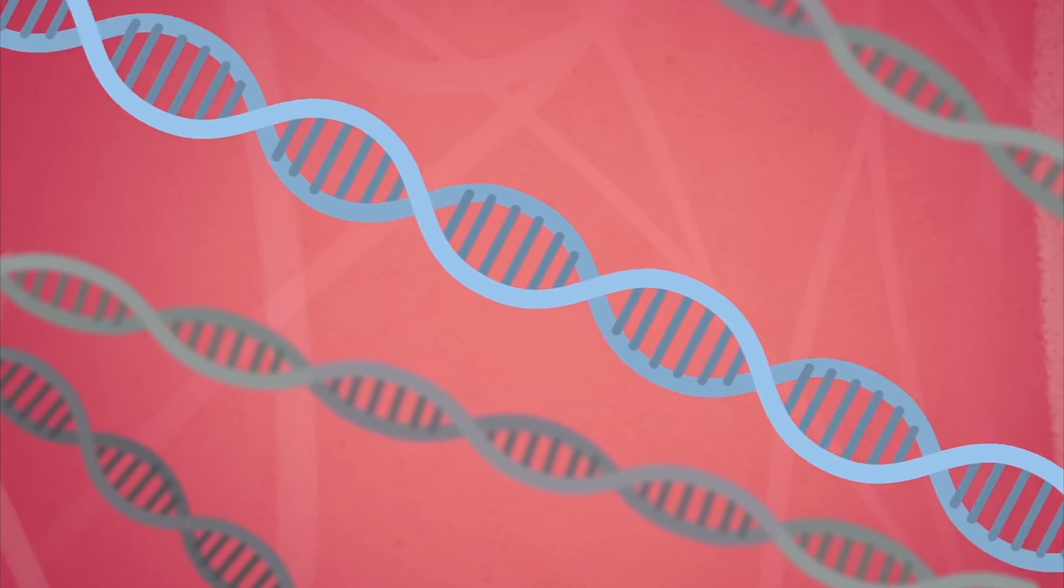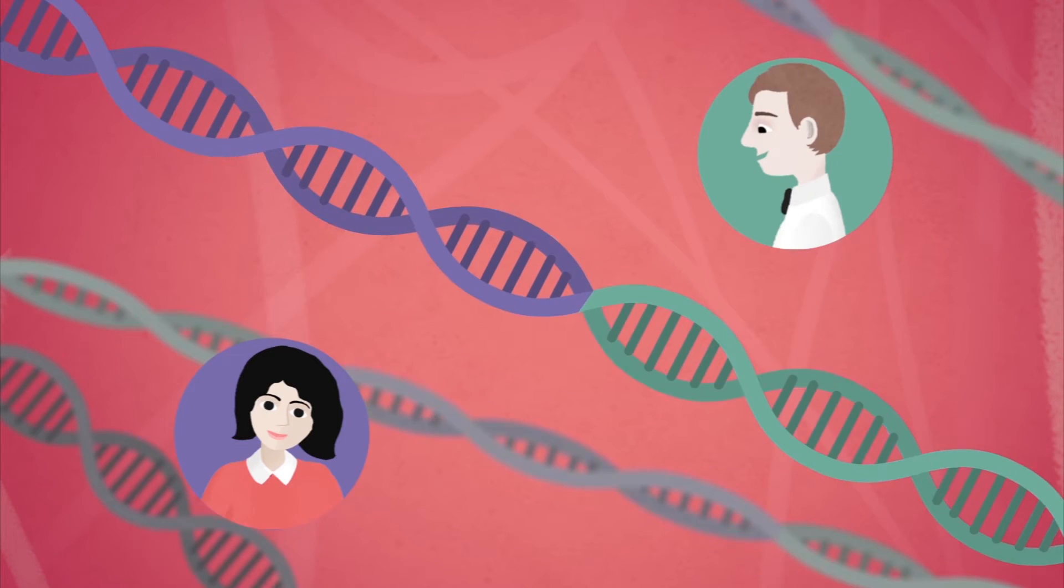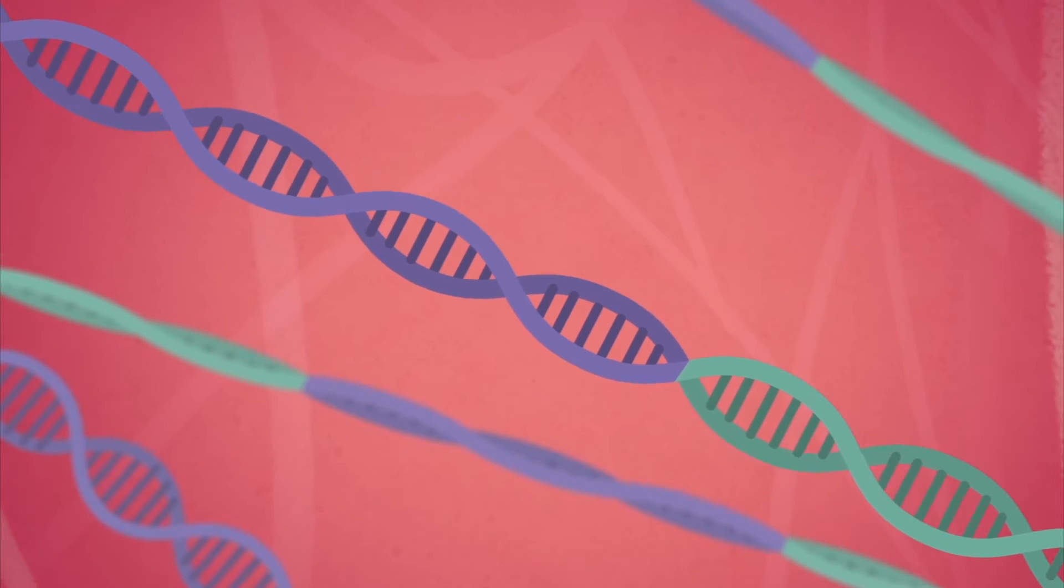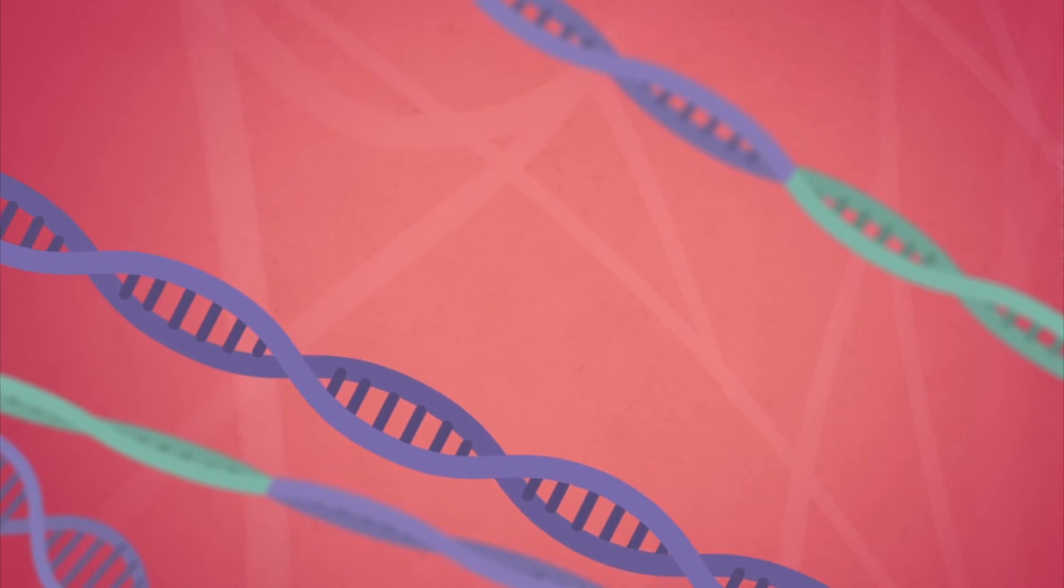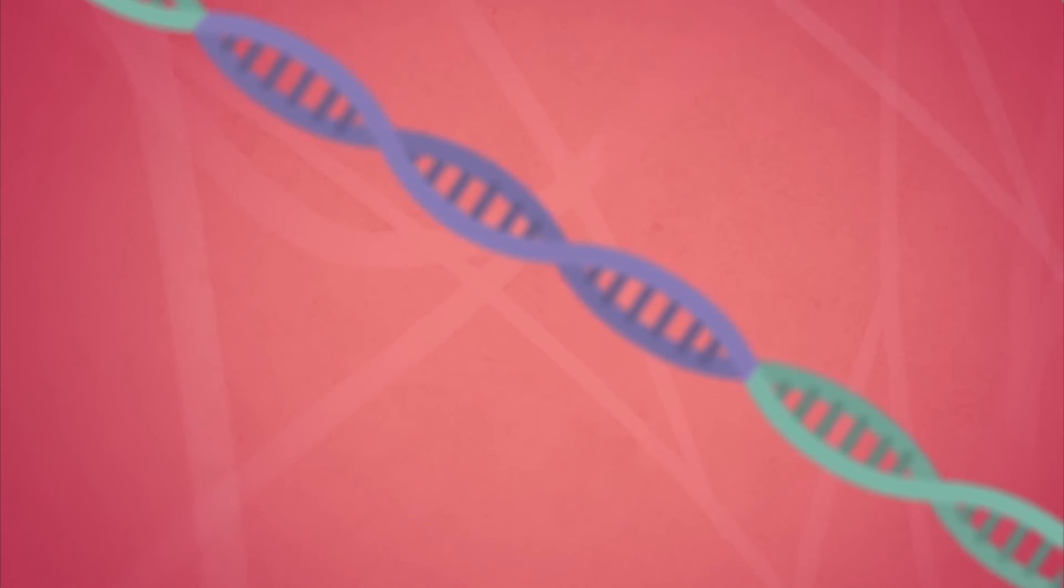You have two of every gene, one from your mum and one from your dad. Your exact mix of genes is unique. Unless you have an identical twin, nobody has the same set of genes as you.